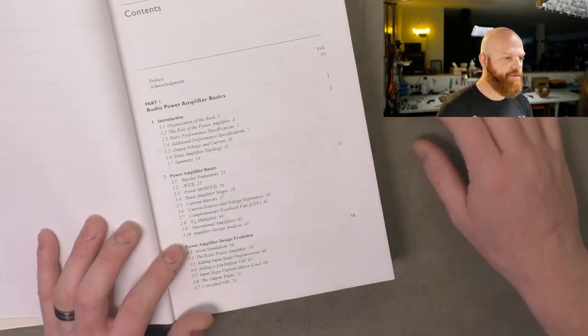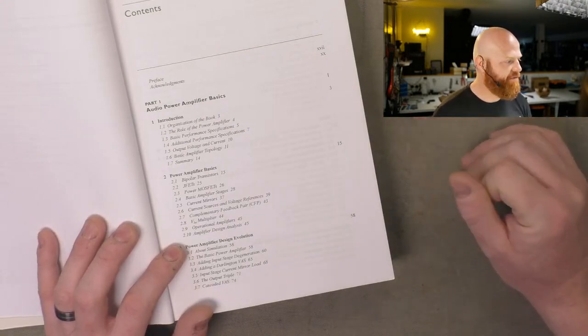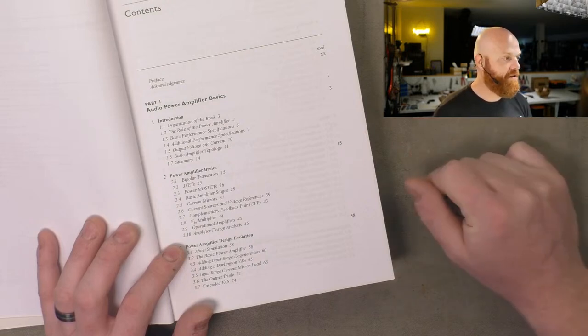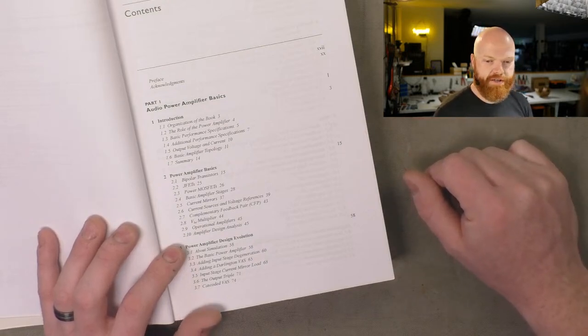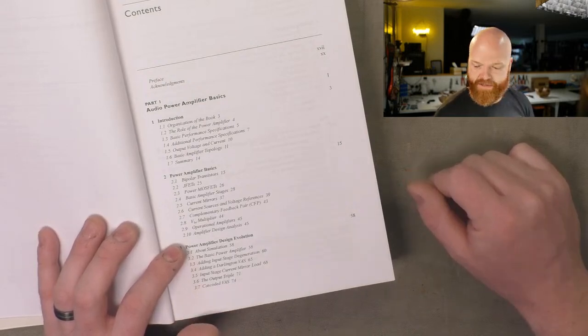That's the complementary input pair. That's the output stage. That's the output driver stage. That looks like a feedback network. That looks like a Zobel network. That looks like a protection circuit. That looks like a comparator that measures DC offset on the output stage and drives the protection circuit.